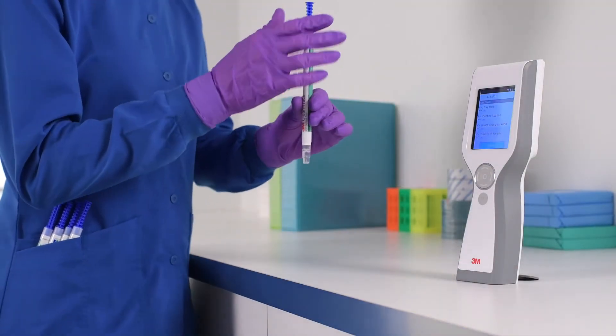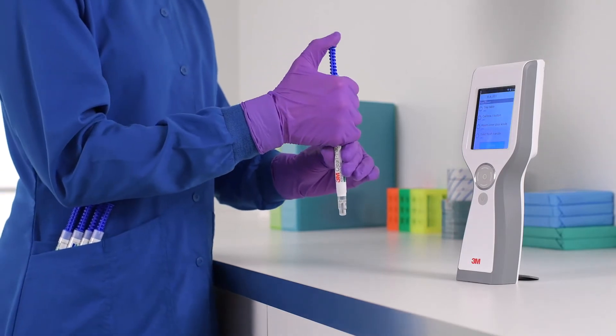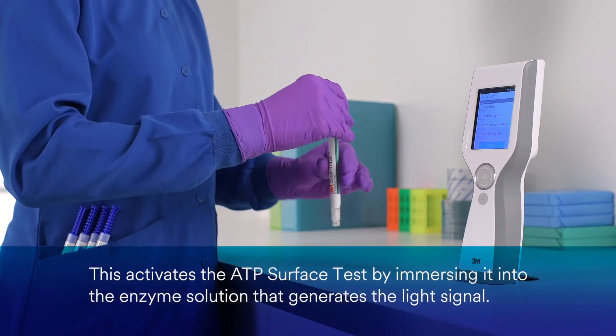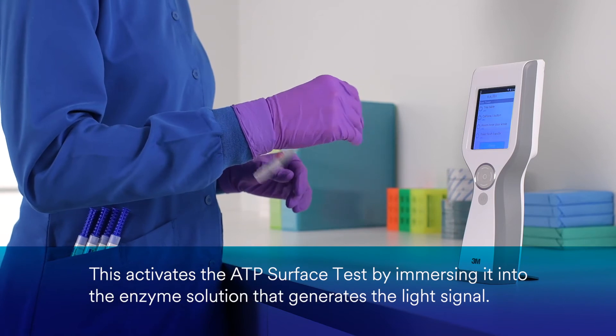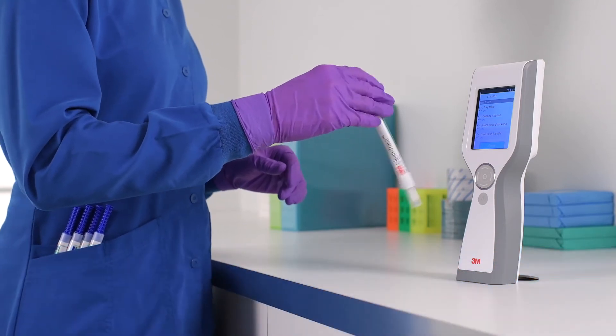When you are ready to activate and measure your ATP tests, press the handle down until you feel a click. Grip the top of the test and shake side to side for at least 5 seconds.